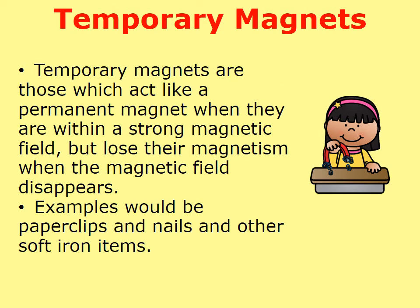Temporary magnets are those which act like a permanent magnet when they are in a strong magnetic field, but lose their magnetism when the magnetic field disappears. Examples would be paper clips, nails, and other soft iron items.